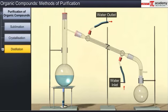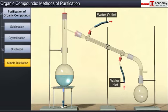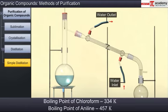Now let's look at the distillation process. This method is used for separating volatile liquids from non-volatile impurities and also to separate liquids which differ in their boiling points. Simple distillation is used when the liquids in the mixture differ appreciably in their boiling points — for example, a mixture of chloroform and aniline, which differ in their boiling point by 123 degrees Celsius, are separated by this technique.